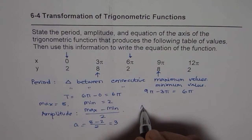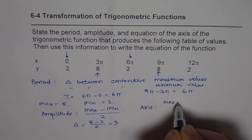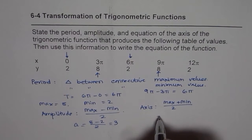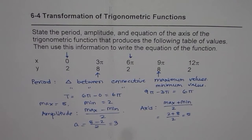To find the axis equation, we calculate: (maximum + minimum) ÷ 2. It is the average value. In this case, (2 + 8) ÷ 2 = 10 ÷ 2 = 5. So the axis is y = 5.